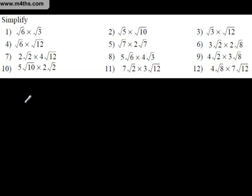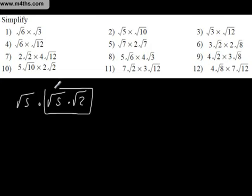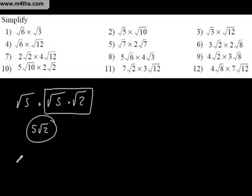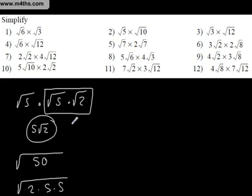Looking at √5 multiplied by √5 multiplied by √2: √5 times by √5 is 5, giving 5√2. Or you could have written this as √50 and then prime factorised 50 to get 2 times 25, or 2 times by 5 times by 5, giving the same result. It's entirely up to you which method you prefer.